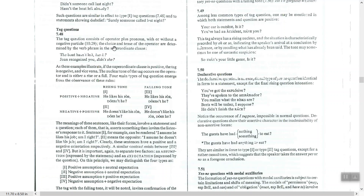The choice and tense of the operator — 'has', 'didn't' — are determined by the verb phrase of the superordinate clause. Both the operator and the pronoun depend on that verb. For example: 'The poet hasn't left, has it?' and 'She recognized you, didn't she?' In these examples, if the superordinate clause is positive, the tag is negative, and vice versa.